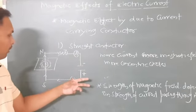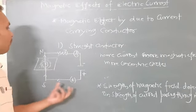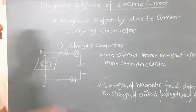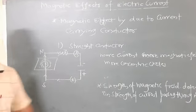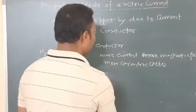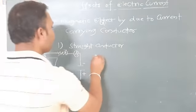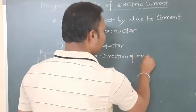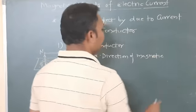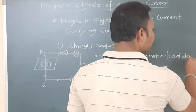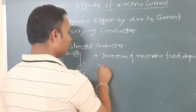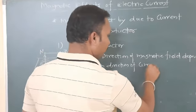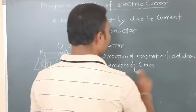Third point: the direction of magnetic field depends on the direction of current. The direction of magnetic field depends on the direction of current — this is a very important point.